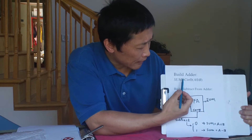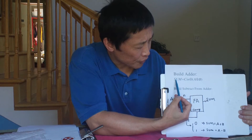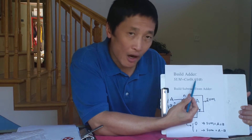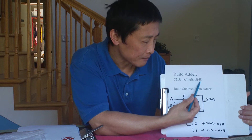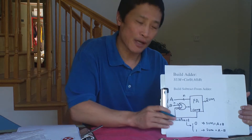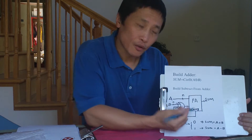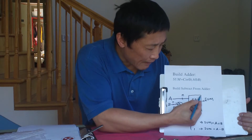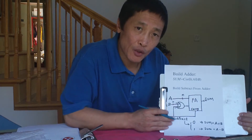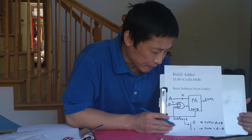Another application of the exclusive OR gate: suppose you want to build an adder. The sum of two operands A and B plus the carry-in is the sum — the exclusive OR of all three of them.